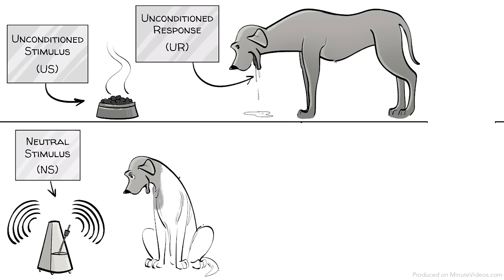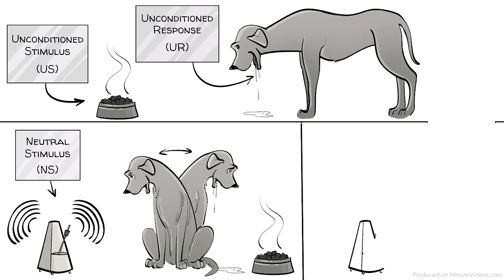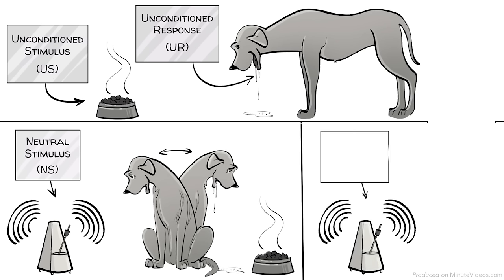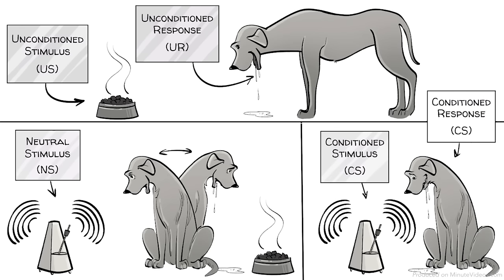Through the process of repetitive pairing with food, the dog learns to connect the two. This means that the neutral stimulus becomes the conditioned stimulus and the response to that a conditioned response.